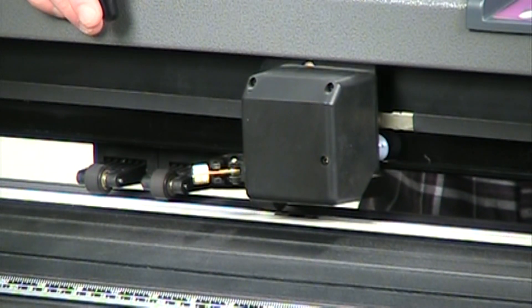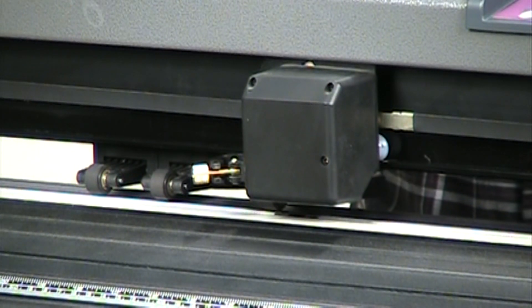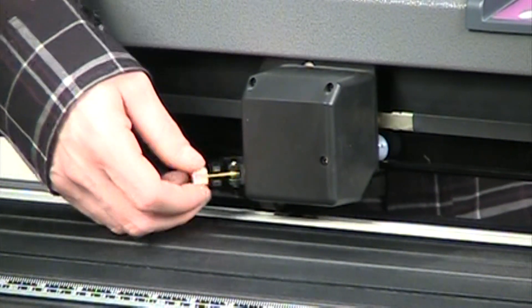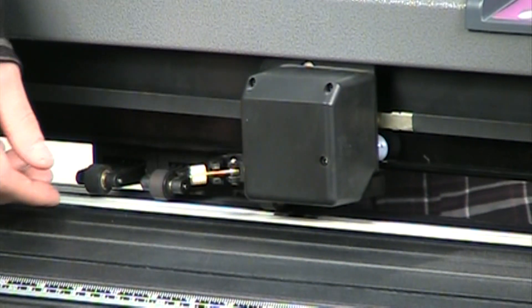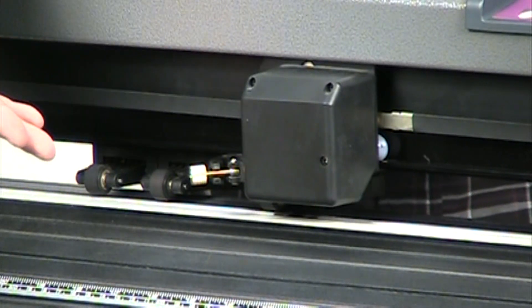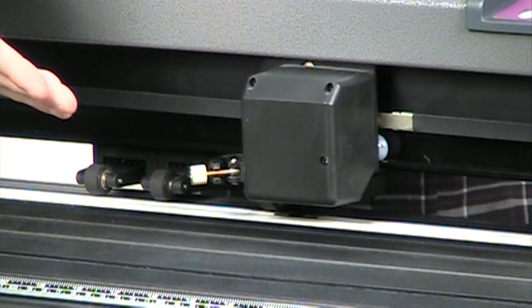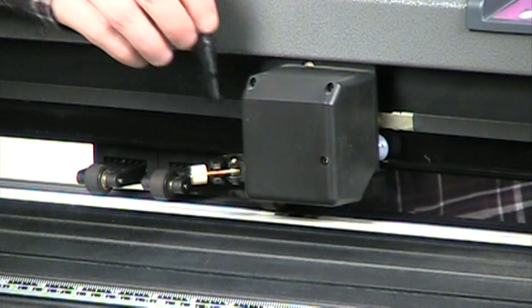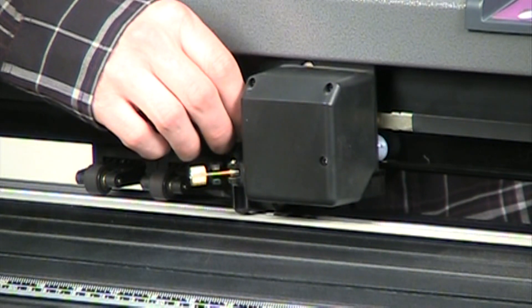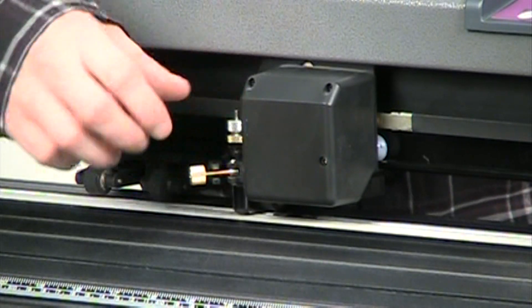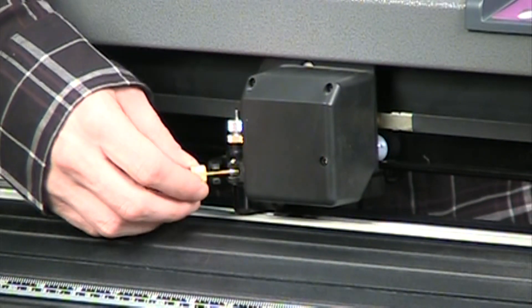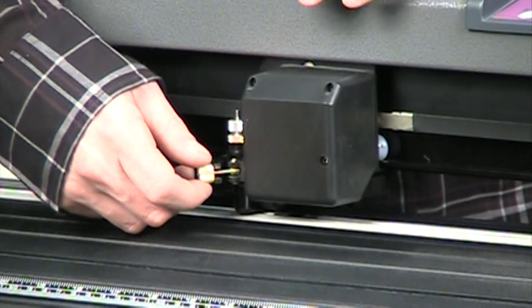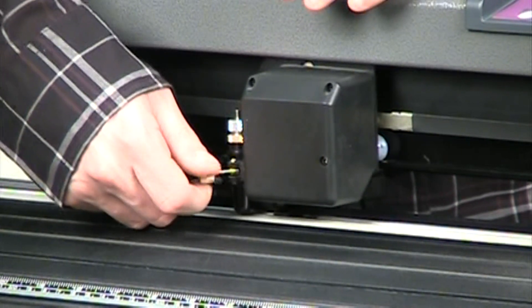Once we've got our blade depth set the next important part is to actually load the blade into the cutter. You'll notice this little gold thumb screw. We're going to want to loosen this up. You'll also notice where we're going to load the blade almost looks like a figure eight or there's almost two potential spots where we can load it. We always want to load this in the top slot or the slot closest to the back of the machine. Once you have it in you'll just want to slide the blade down so that the flange is flush. Then you just want to gently tighten up the thumb screw. Don't necessarily need to make it too tight but just tight enough that the blade won't move at all during the cut.